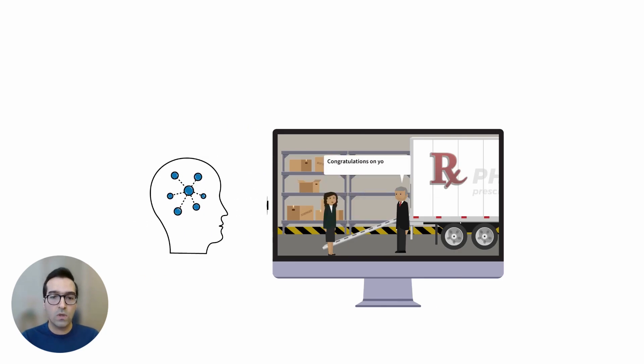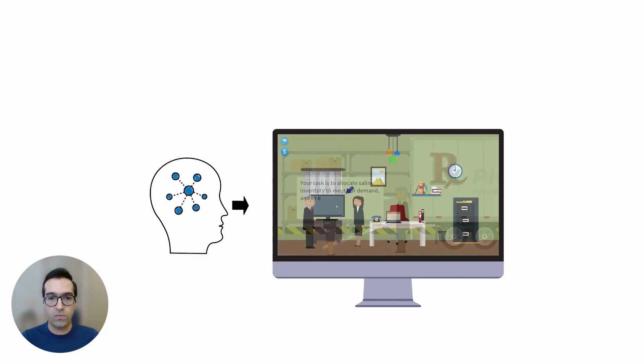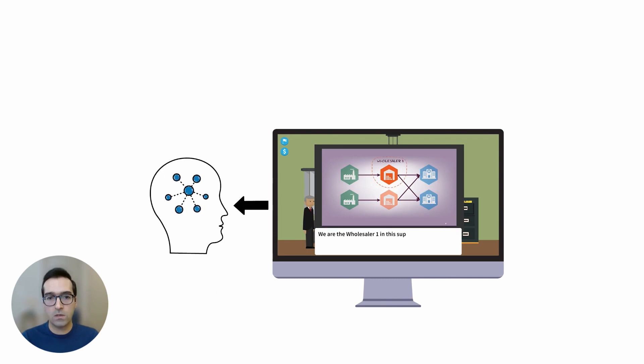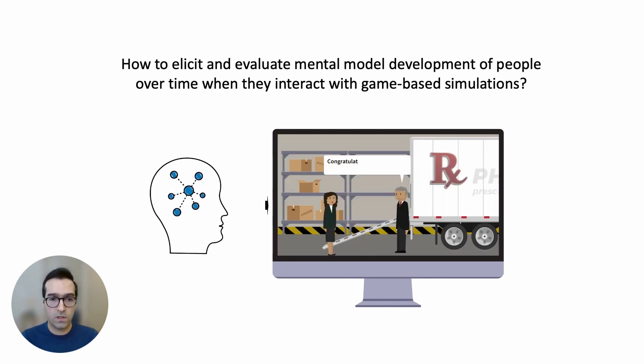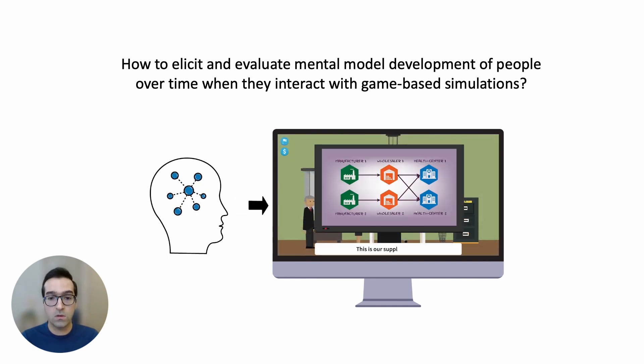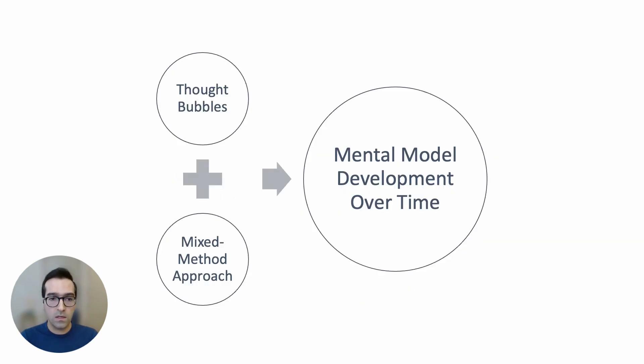The question is how should we extract mental models of people in their interaction with game-based simulations? And then how should we evaluate the results of elicitation to get insight into mental model development over time? In this paper, we present such an elicitation technique that we call Thought Bubbles and we use it to evoke players' thought processes diegetically and in context. We also show a mixed method approach for analyzing the elicited mental models to study mental model development over time.